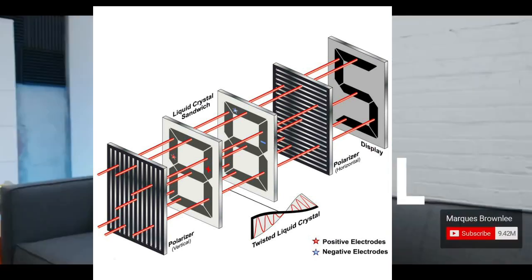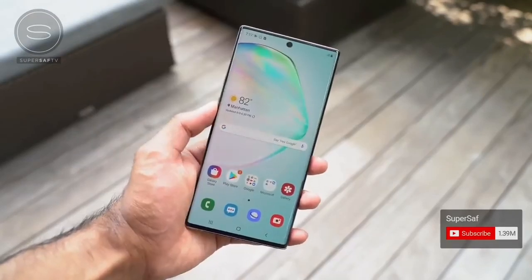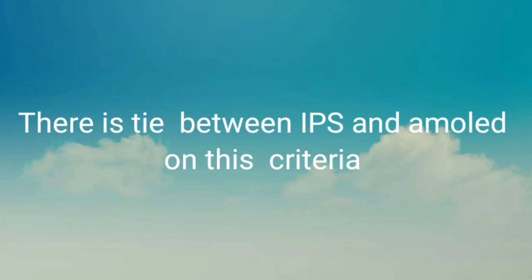The electric field changes the nature of the liquid crystals behavior to produce good viewing angles. Thus most of the time photographers usually prefer to use an IPS LCD. There is a tie between LCD and AMOLED display.